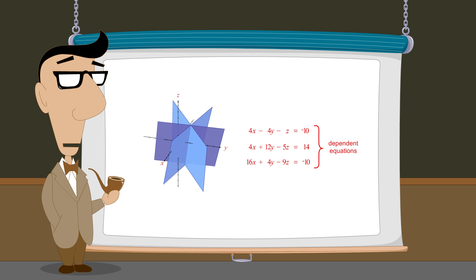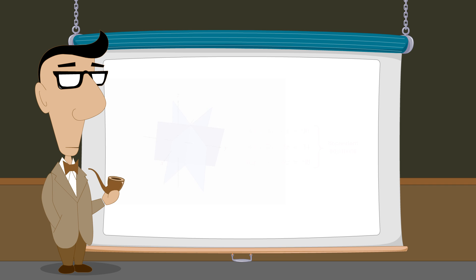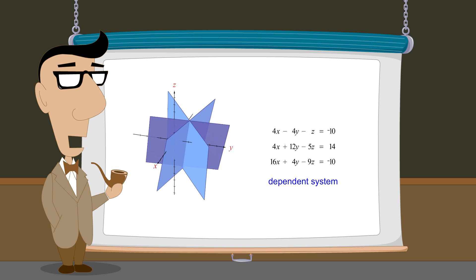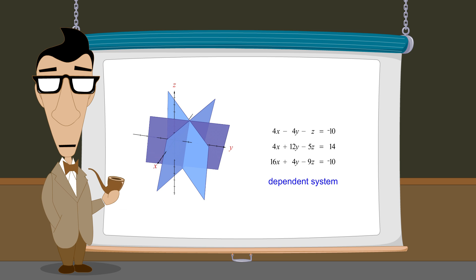So how can we tell if a system of equations is dependent? It is usually easy to spot when two equations in the system are multiples of each other. But it is not always easy to tell when a group of more than two equations are linear combinations of each other. Fortunately, the process of Gauss-Jordan elimination automatically takes care of this without us having to know whether or not the system is dependent.